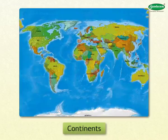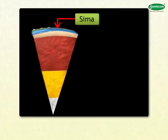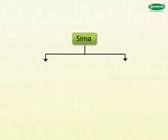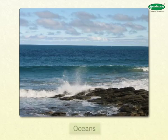SIMA is the layer below the SIAL. The rocks in this layer consist of compounds of silica and magnesium. Most of the oceans are formed out of this layer. It is heavier than SIAL.